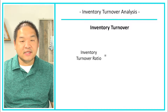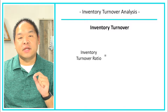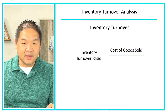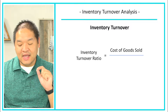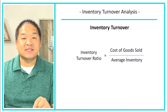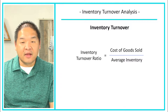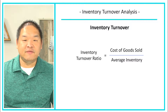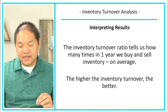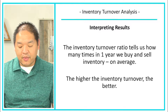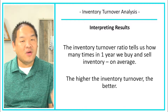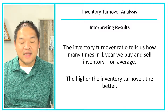How do we calculate this? We take cost of goods sold from the income statement and divide it by the average inventory on the balance sheet. So this is an instance where we need to look at both the income statement and the balance sheet to get the inventory turnover ratio. The inventory turnover ratio tells us how many times in a year we buy and sell inventory on average — this is just an average, not always exact.